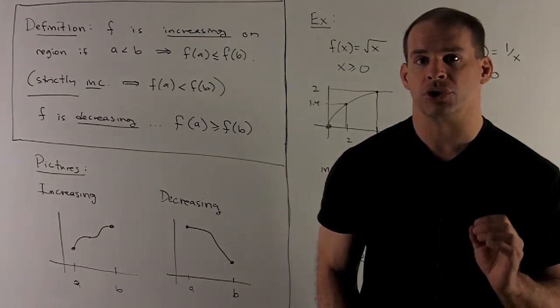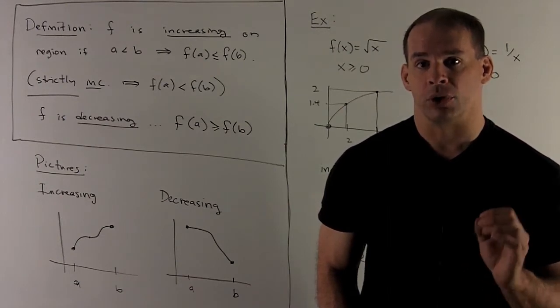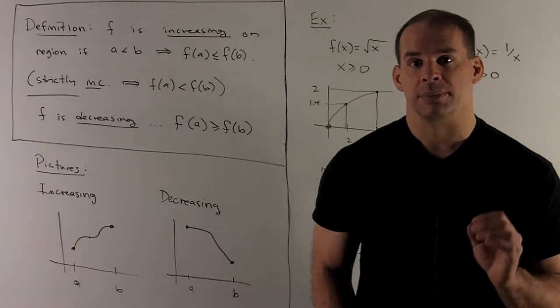What's the connection between the first derivative and increasing and decreasing for the graph of a function f? Before we get to that, some definitions.